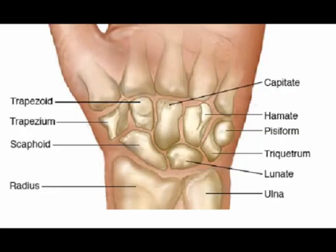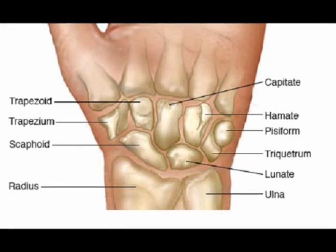The distal row of the carpal bones consists of the trapezium, the trapezoid, the capitate, and the hamate.